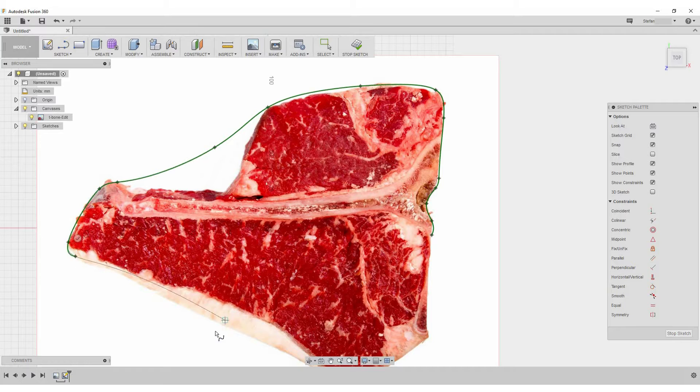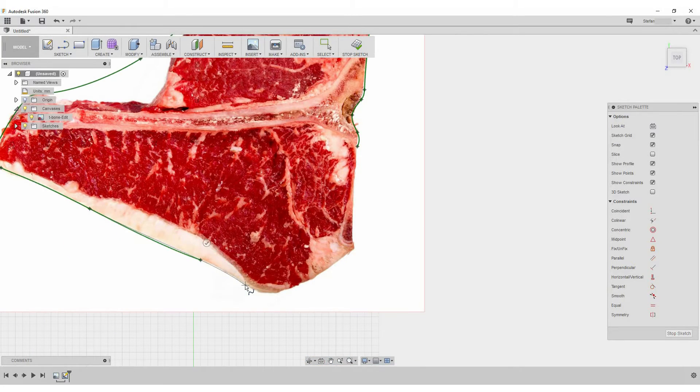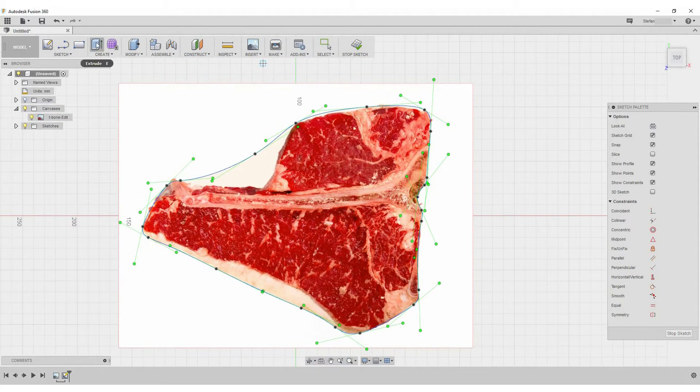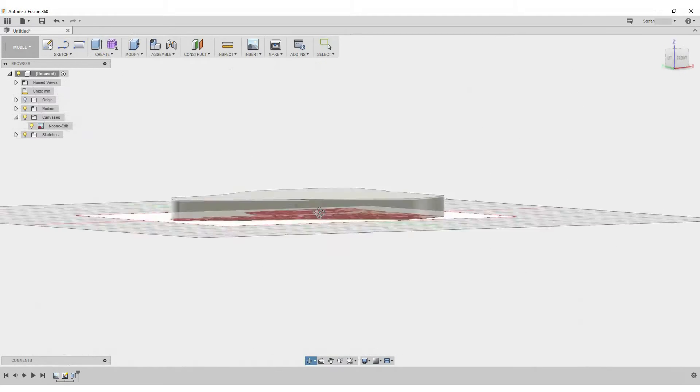I guess therefore it's technically no T-board anymore and rather a porterhouse board. But well, T-board sounds better. This sketch is extruded to the thickness of the wood board I'll be using.